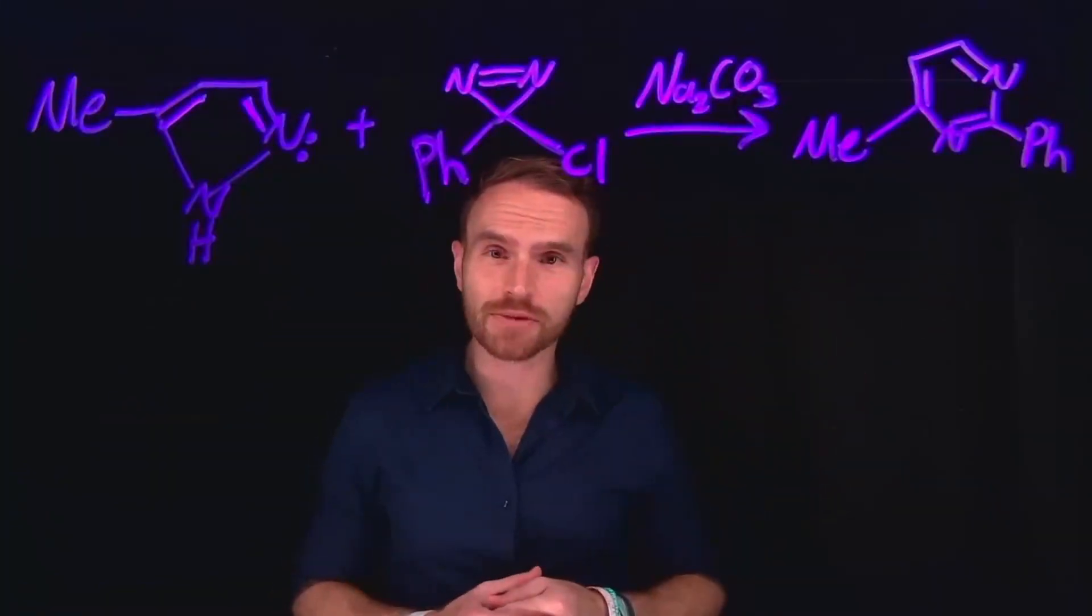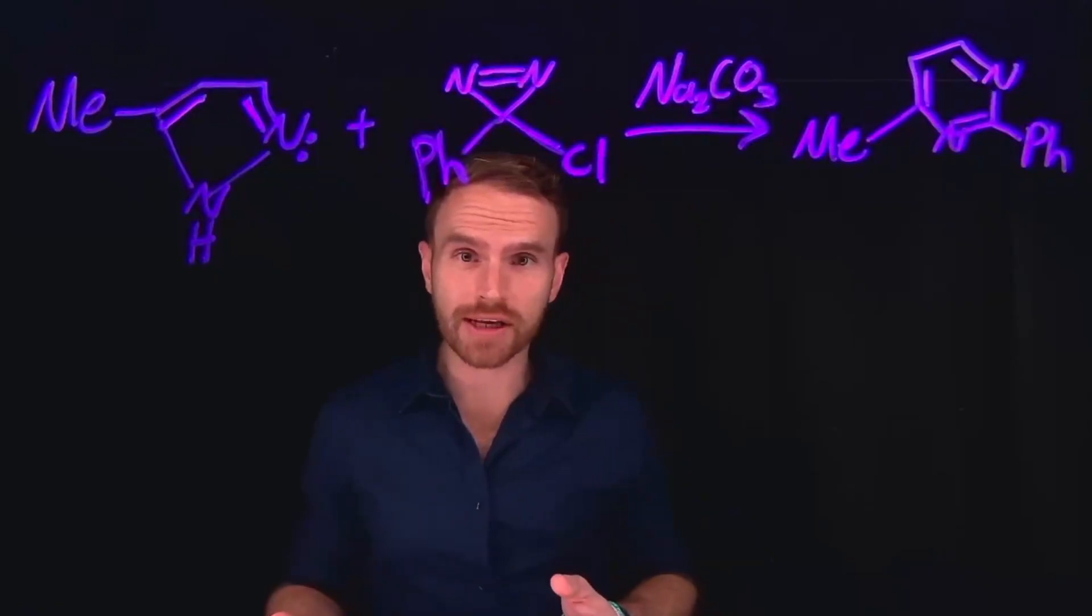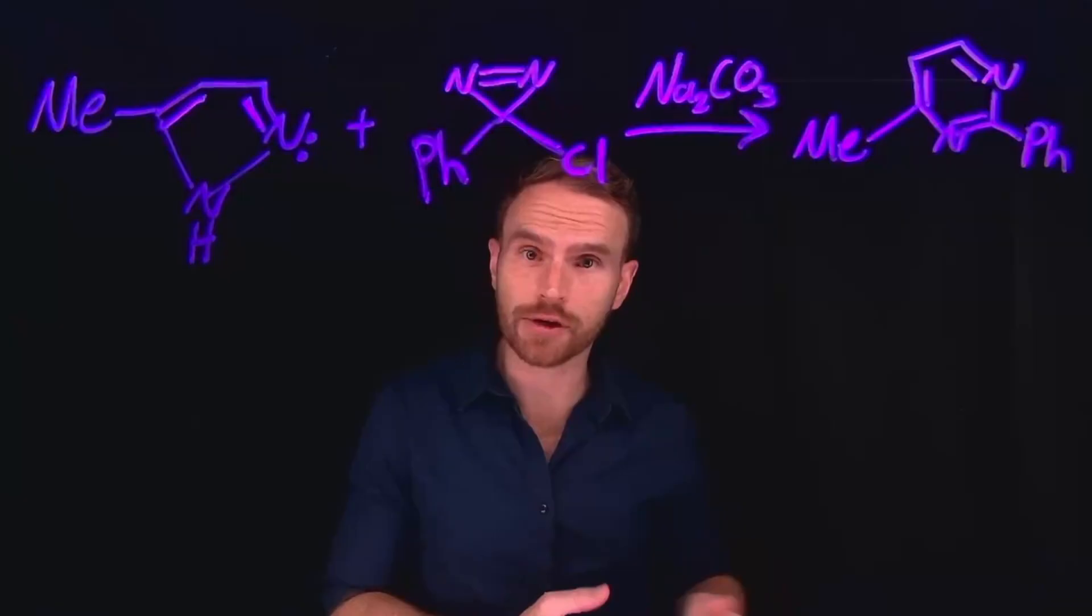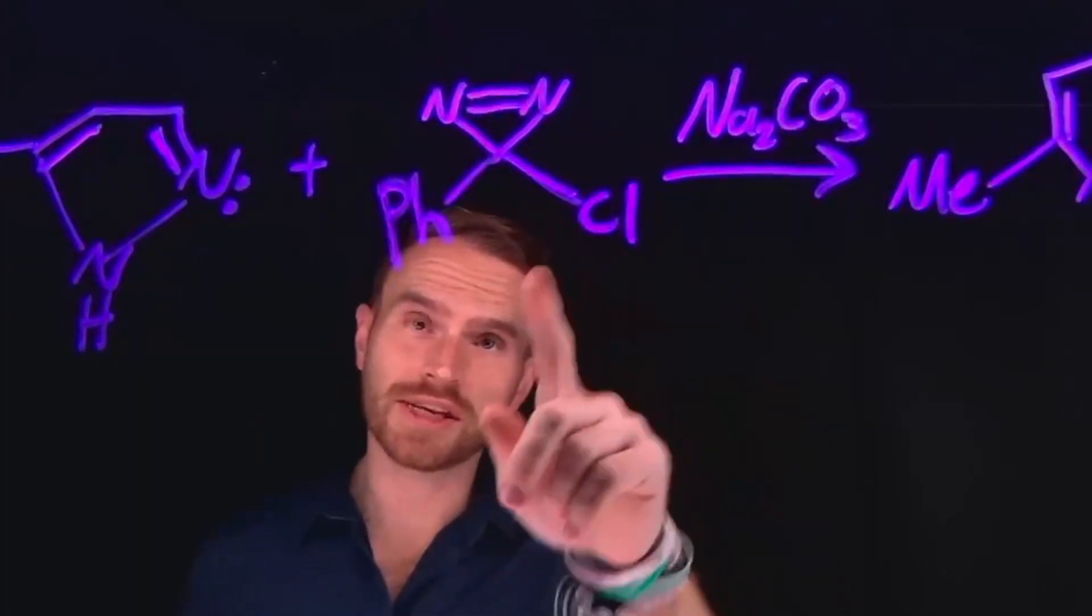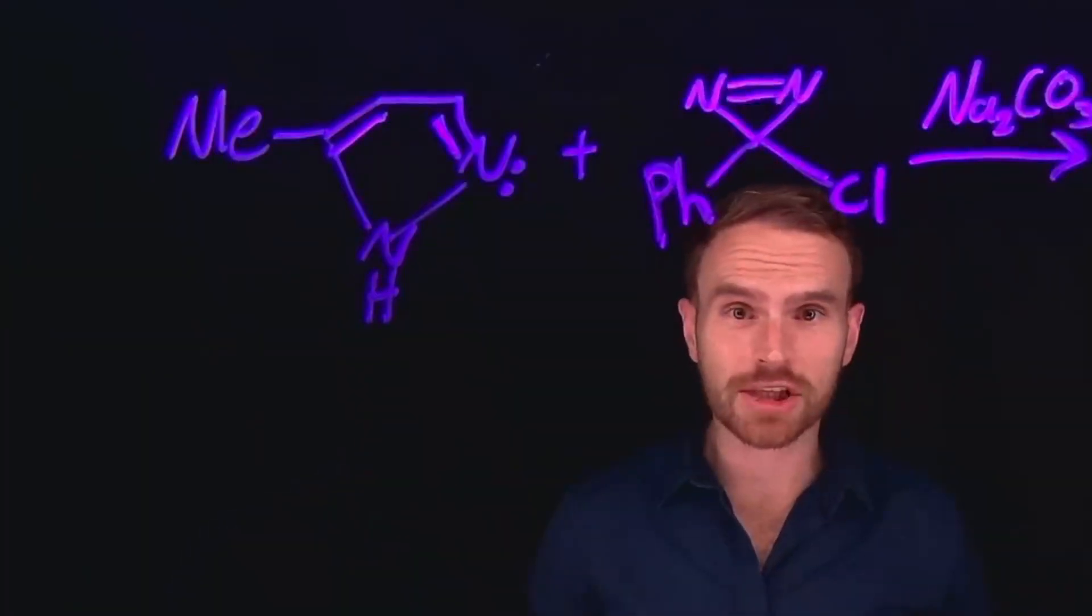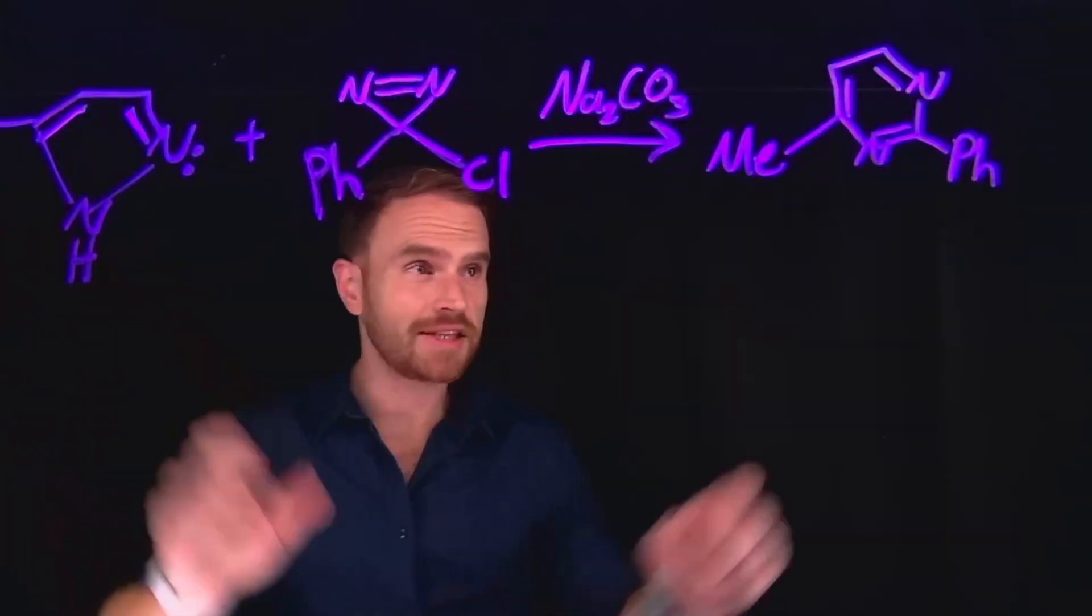This chemical transformation actually comes from a paper published in the Journal of American Chemical Society by the Mark Levin Group at University of Chicago, where they showed that they could use chlorodiazerines, which is what this molecule is called, to transform things like tyrosols into pyrimidines.